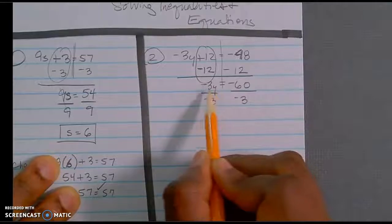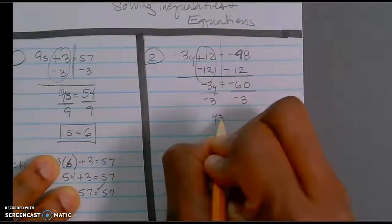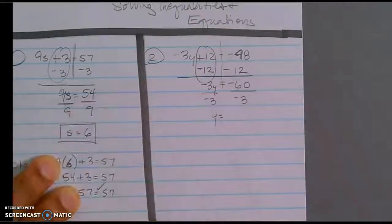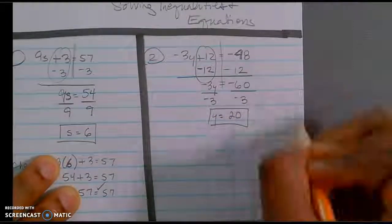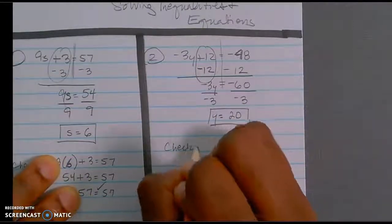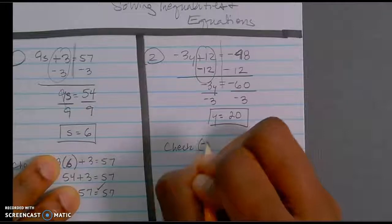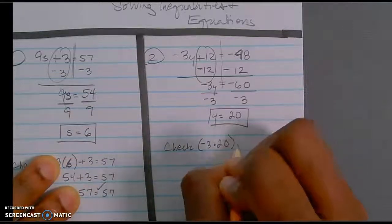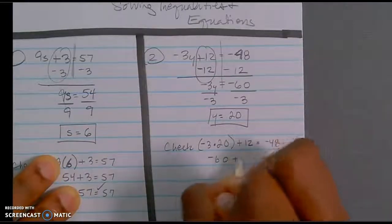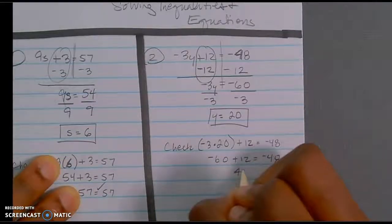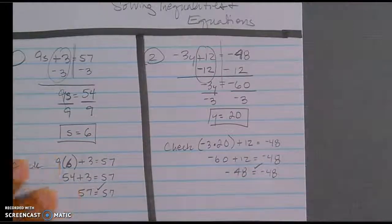I'm going to use the inverse operation of what's happening here — the inverse is division. When I divide a negative by a negative, that becomes positive. Negative 60 divided by negative 3 becomes 20. For my check: negative 3 times 20 plus 12 is equal to negative 48. This becomes negative 60 plus 12, which equals negative 48. Negative 48 is equal to negative 48 — correct.